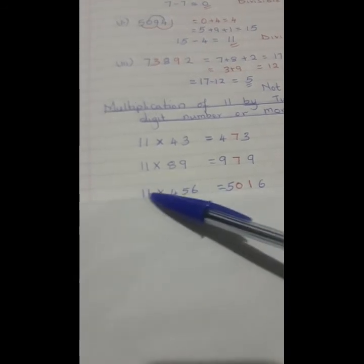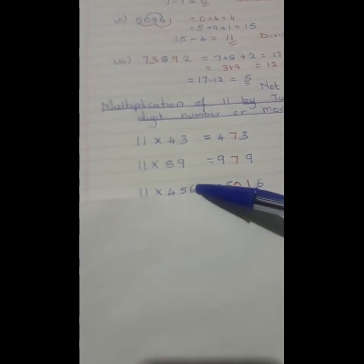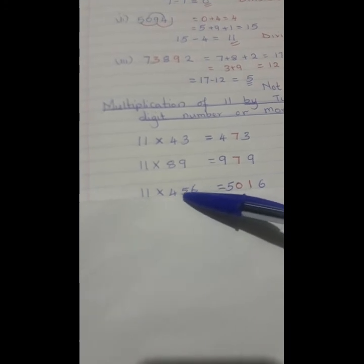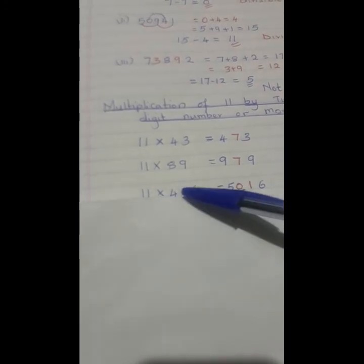Then the last example. We have 11 by 456. So what I'll simply do: I'll take the first number, I'll write the way it is, 6. The second number I'll add 6 and 5. I'll get 11, write 1, carry 1. Then I'll add 5 plus 4, I'll get 9, plus my carry is 10. I'll write 0, carry 1, and then add on the last number which is 4, giving 5, and my answer becomes 5016.